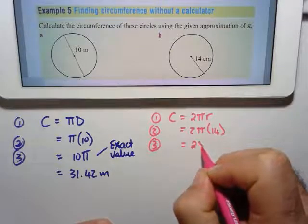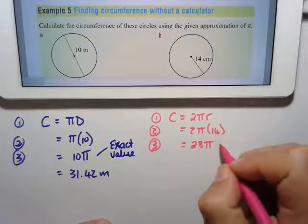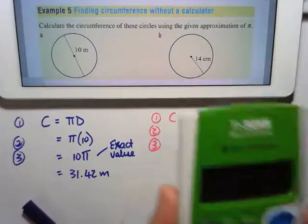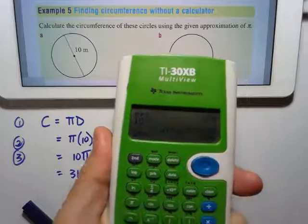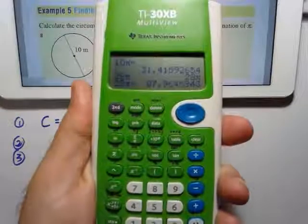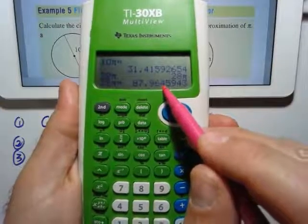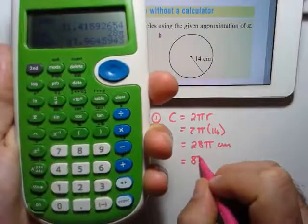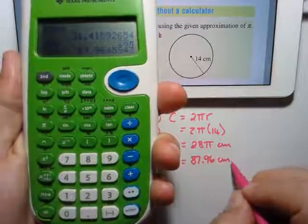14 times 2 is 28π. That will be the exact value, I will say centimeters. Otherwise, on my calculator, 28π equals 87 point... look at the third one, it's smaller than five, so it's 87.96, 87.96, and this will be in centimeters.